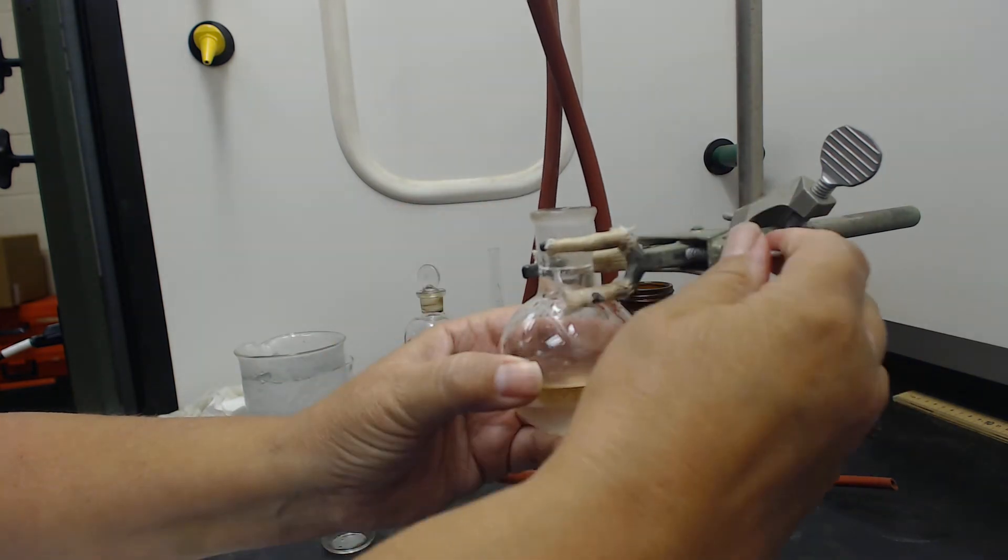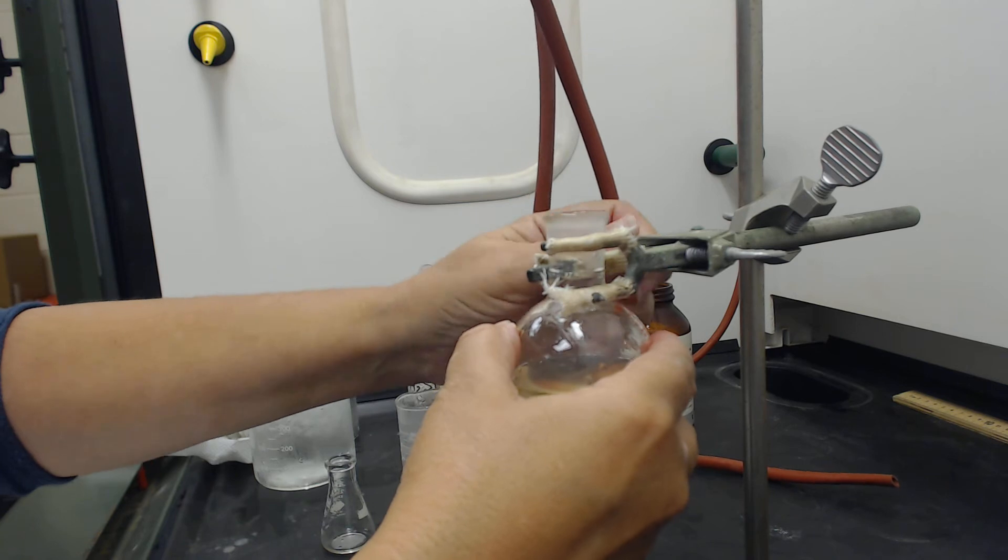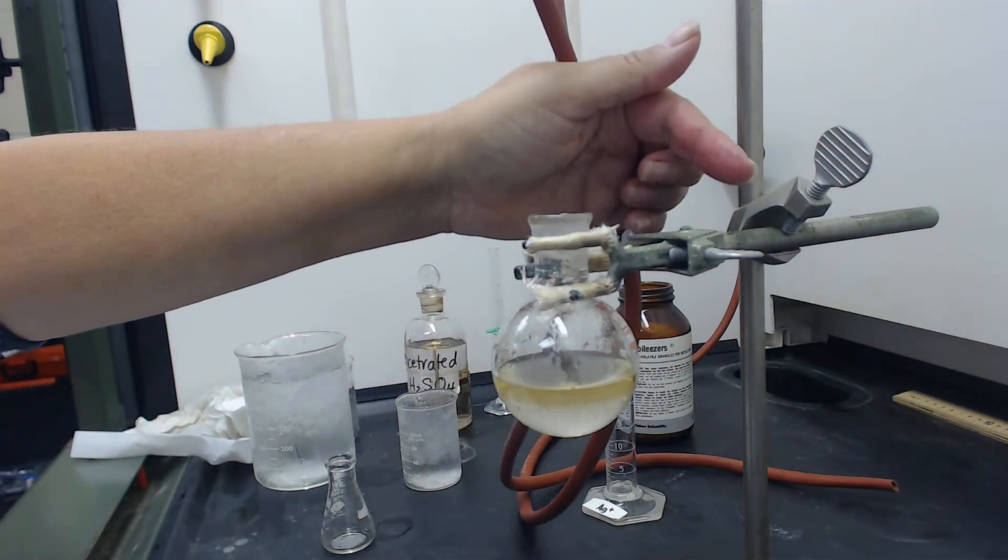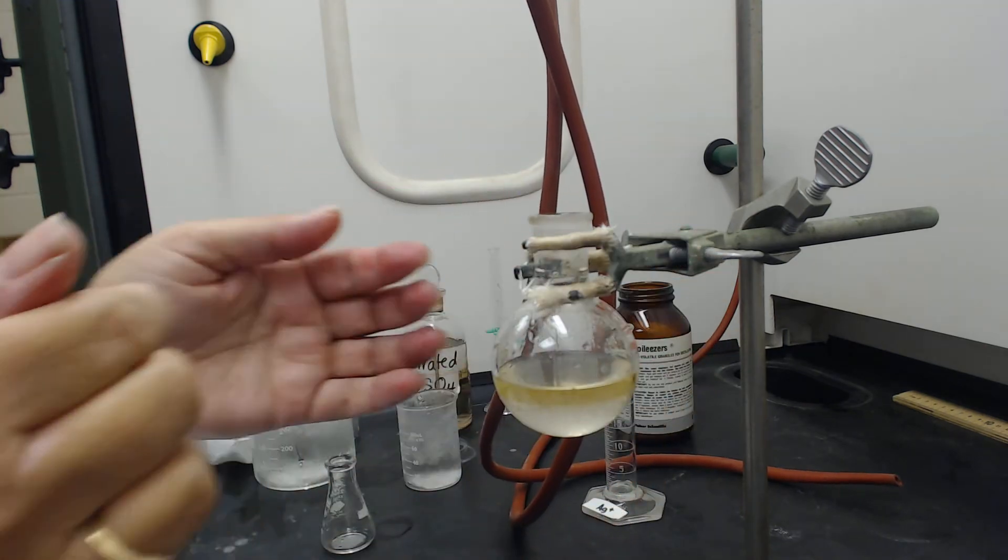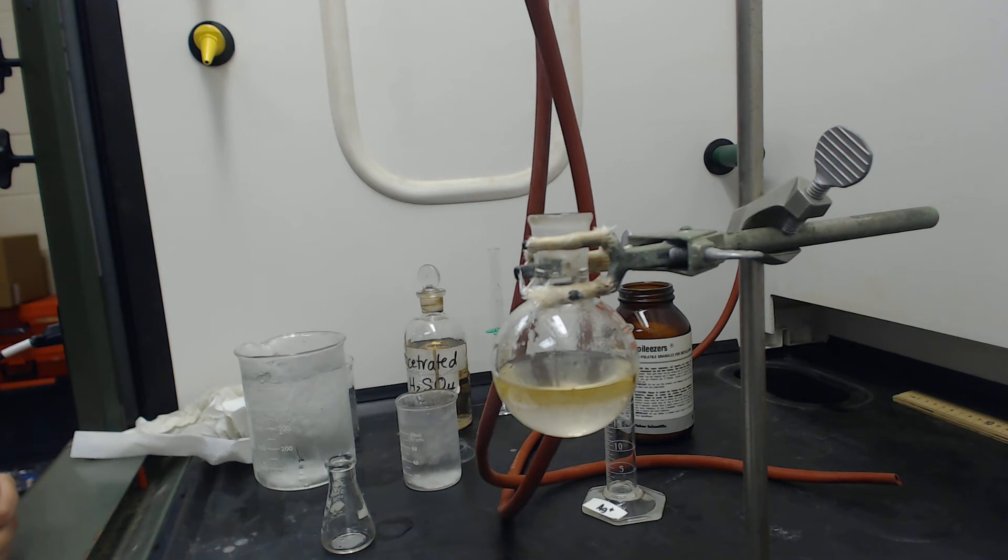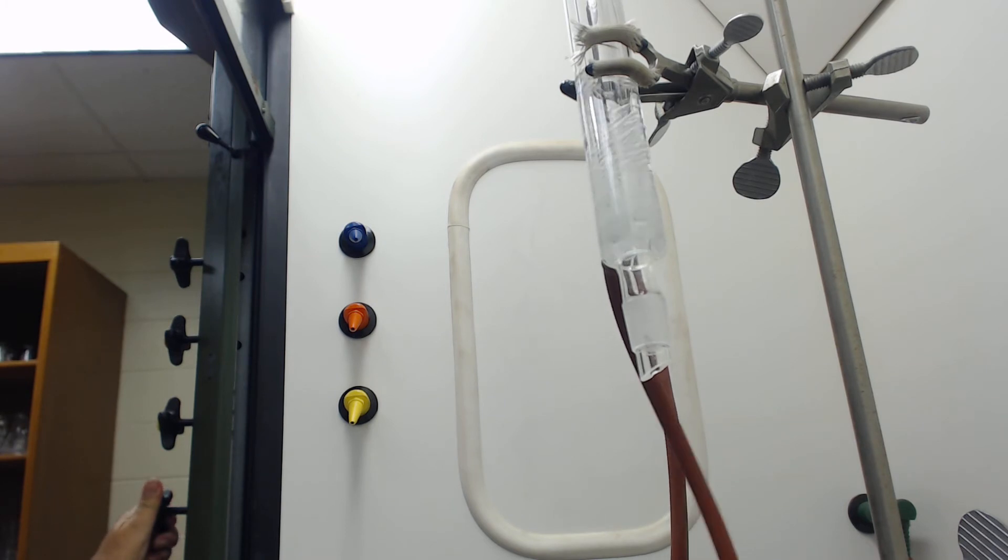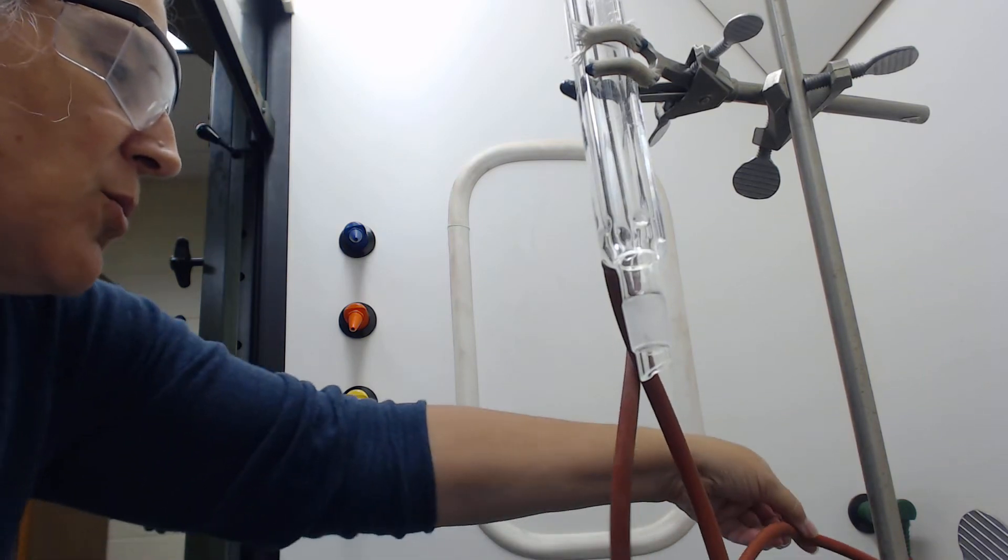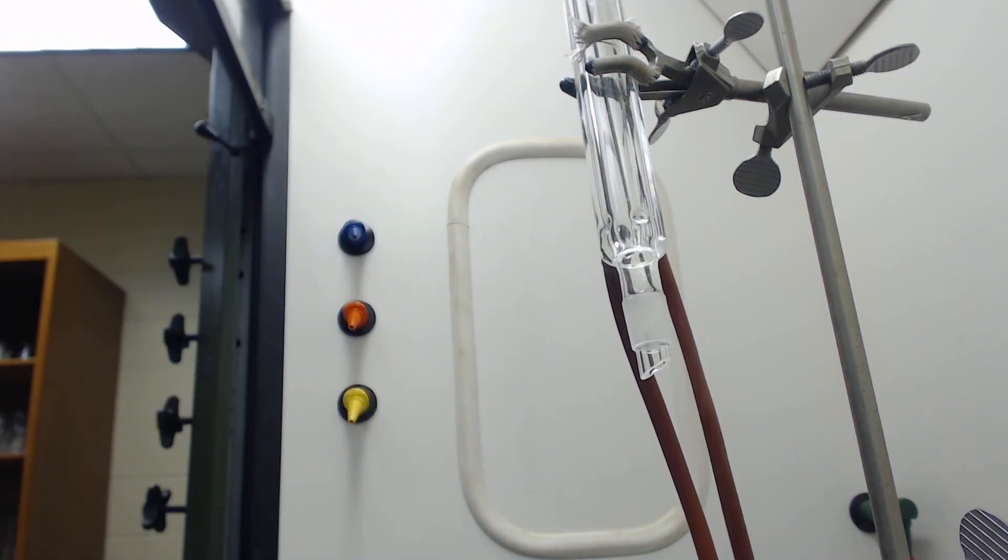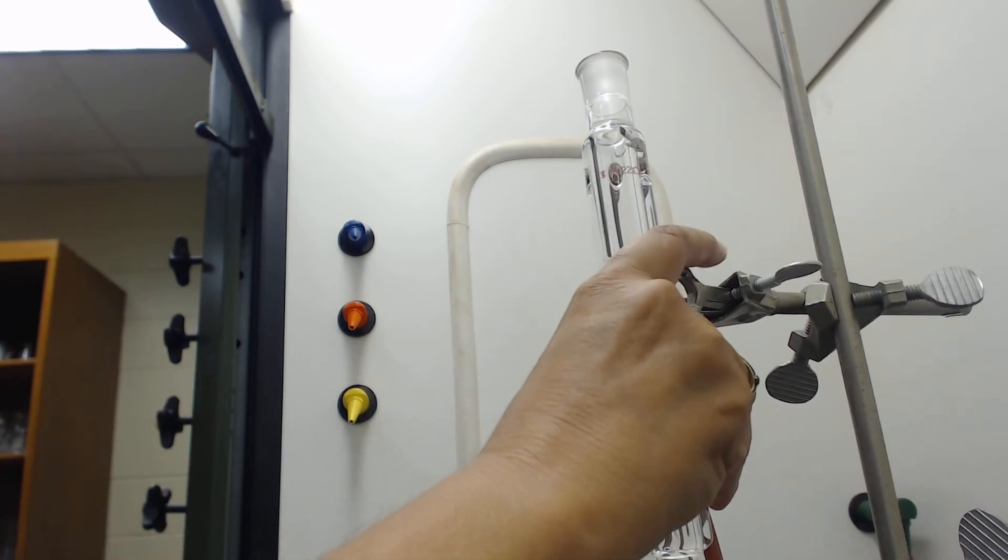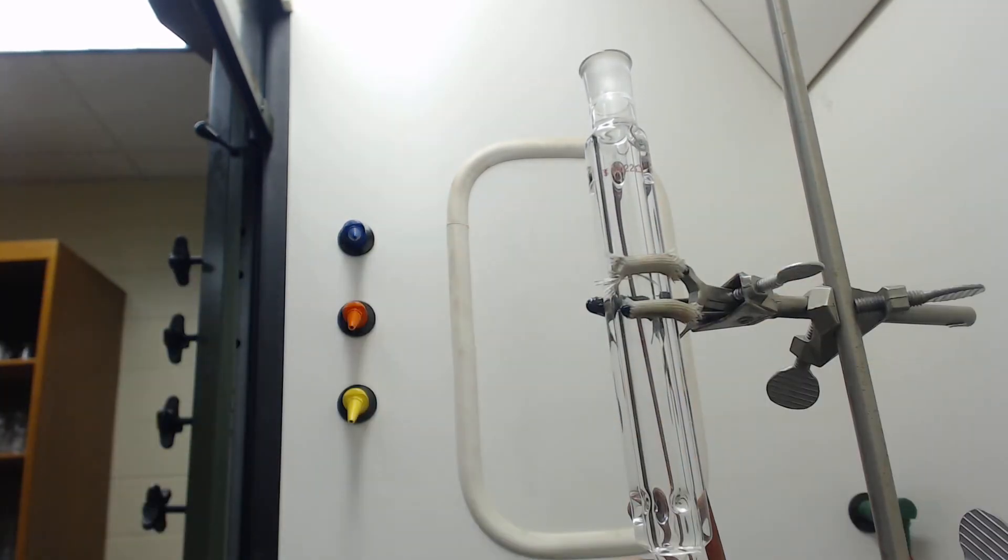After the addition is complete, remove the round bottom flask from the ice bath and fit it with a heating mantle. I've got it clamped. In case you hadn't seen this before, this is a universal clamp which is really nice. This is a condenser like we use in distillation, but this time we're going to fit it in here.